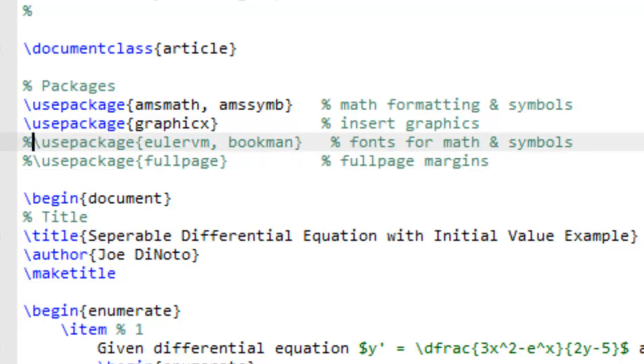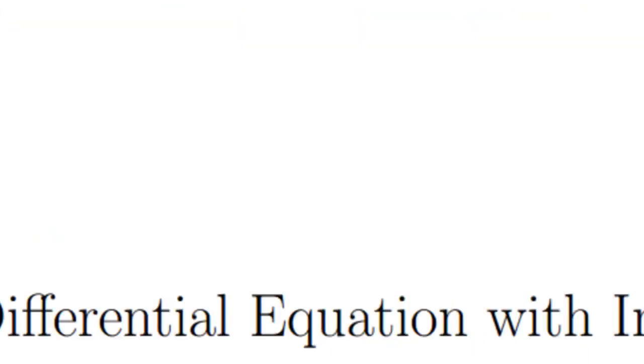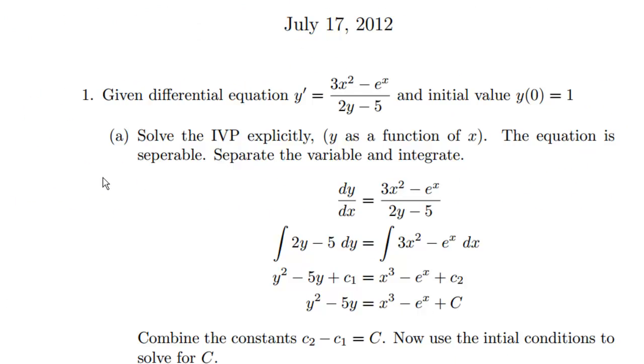Now, Euler VM and Bookman, those are two different fonts for math and symbols. So if I click PDF, this is without using Euler and Bookman. This is the default computer modern font. Okay, have a look at what this font looks like. It's kind of thin. It's kind of sharp. Very professional looking. You probably see this in a lot of undergraduate style PDF notes that you'll see out there in college.